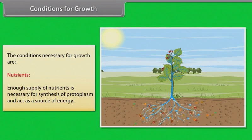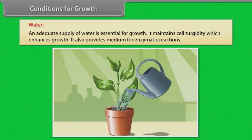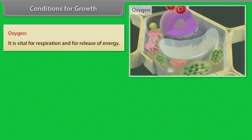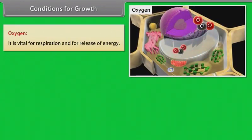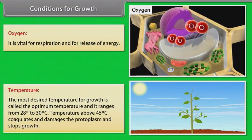Conditions for growth: Nutrients — enough supply of nutrients is necessary for synthesis of protoplasm and act as a source of energy. Water — an adequate supply of water is essential for growth; it maintains cell turgidity which enhances growth, and also provides medium for enzymatic reactions. Oxygen — it is vital for respiration and for release of energy. Temperature — the most desired temperature for growth is called the optimum temperature and it ranges from 28°C to 30°C. Temperature above 45°C coagulates and damages the protoplasm and stops growth.